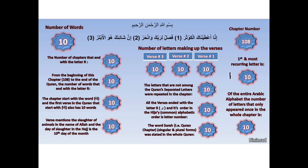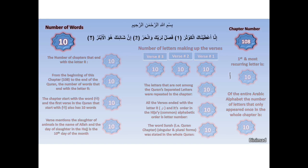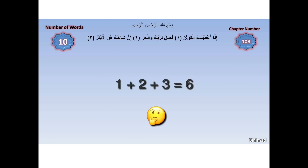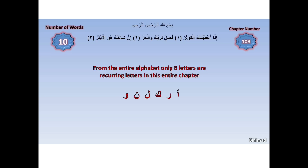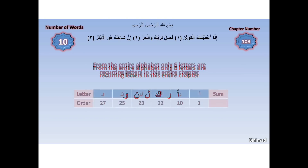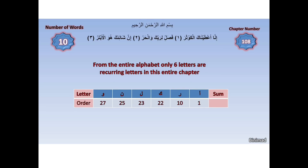Adding up the verse numbers in this chapter gives us six. We discover that from the entire alphabet, only six letters are recurring letters in the chapter — Alif, Ra, Kaaf, Lam, Noon, and Waaw — each appearing more than once. When we look at their positions within the common alphabetic order, we get the numbers 1, 10, and so on. Miraculously, when we add them all up, we get the number 108 — which is the number of the chapter.